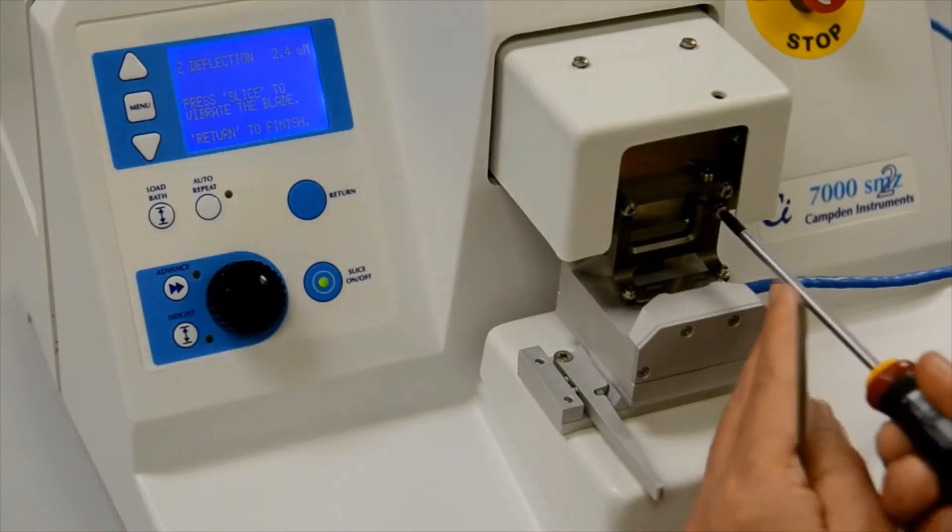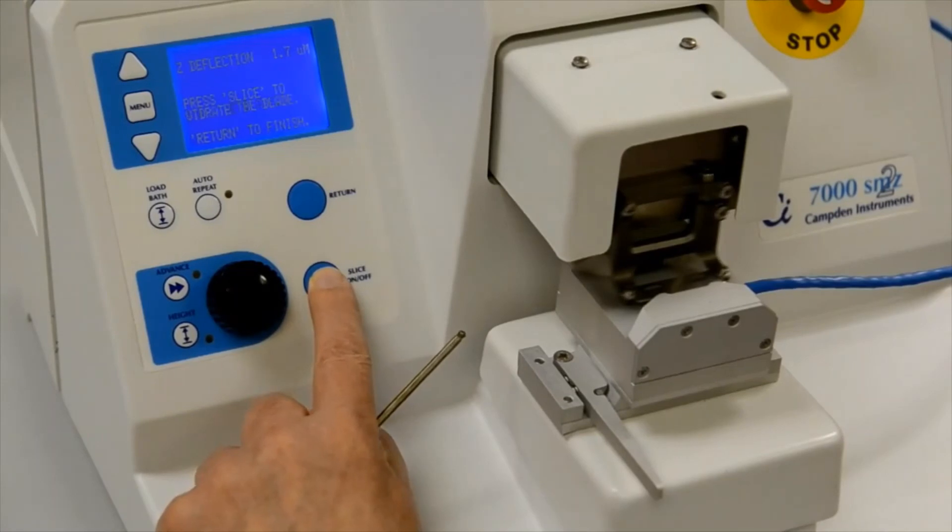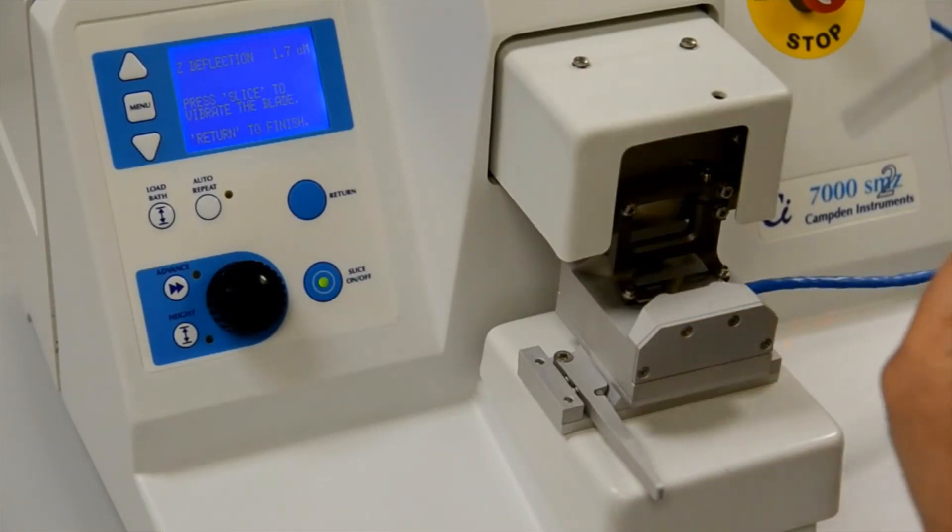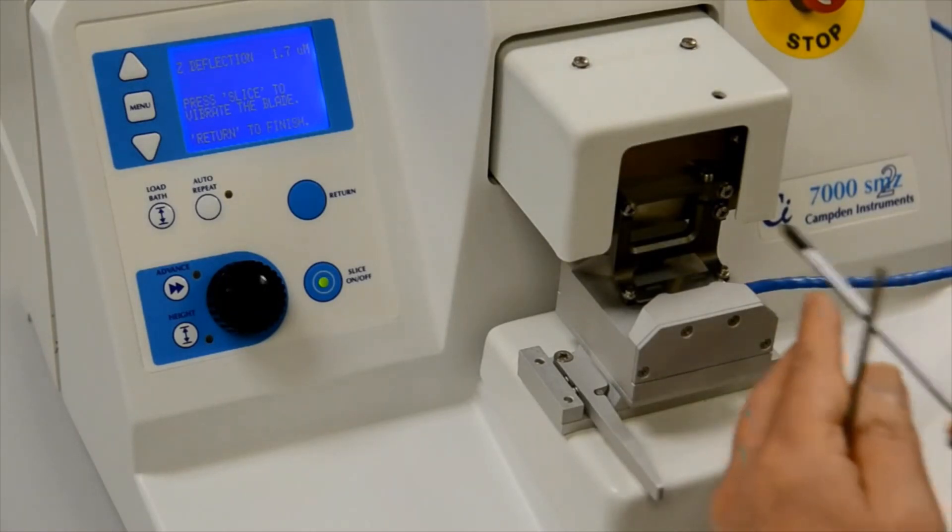If the error has increased, you should turn the adjustment screw in the opposite direction. If the error has reduced, you should turn the screw once more in the same direction. Repeat this process until the alignment error has been minimized.